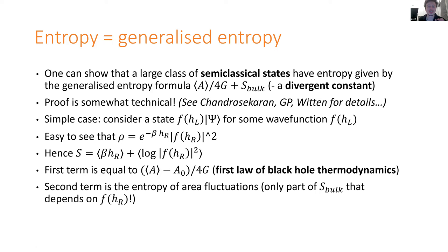I want to emphasize that the fact this works for this simple case is not really the interesting part. The really interesting part is that for an arbitrary semi-classical state with arbitrary state of the bulk quantum fields, we still get the formula expectation of A over 4G plus S_bulk, where S_bulk is now the divergent QFT entropy of that state, which in general is different from that of the Hartle-Hawking state. That's the part that's really interesting, but its derivation is a lot more technical.